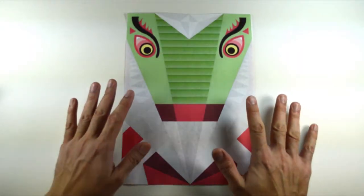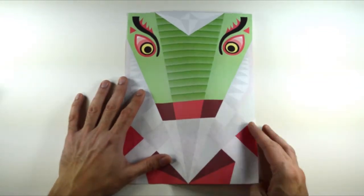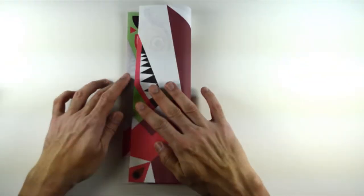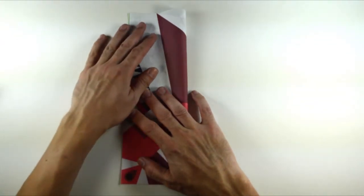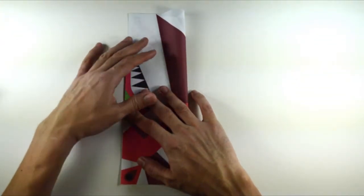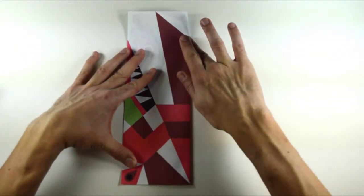The Chinese dragon begins with the front side facing up. Fold the page in half, edge to edge.